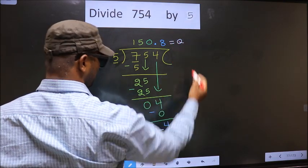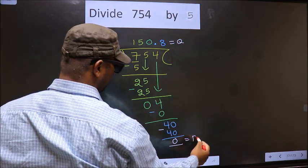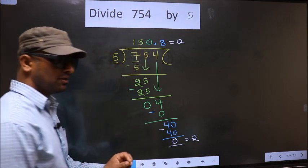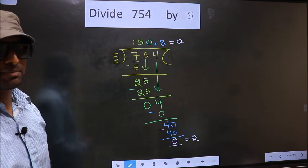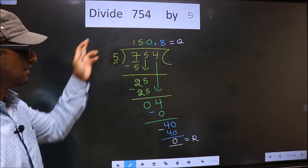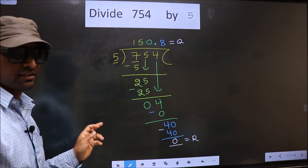So now you subtract we get 0. This is our quotient and this is our remainder. Did you understand where mistake happens? You should not do that mistake.